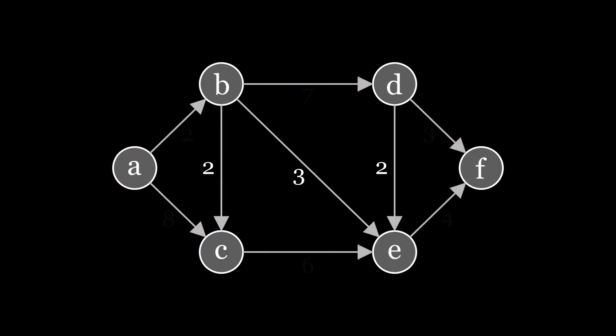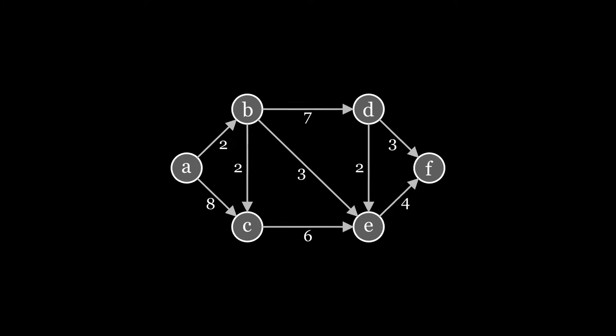The idea behind the Ford-Fulkerson algorithm is to avoid this problem by adding backward edges to the residual graph. In this way, we can undo the choice of bad paths, which do not lead to a maximum flow.